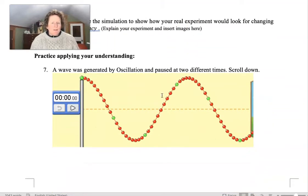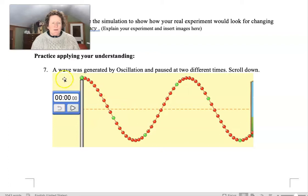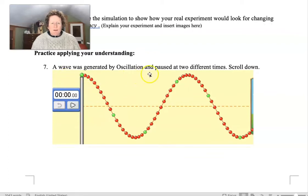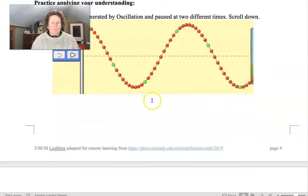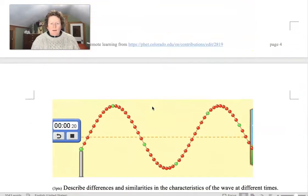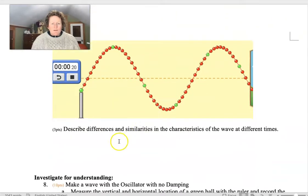So practice applying your understanding is question 7. A wave was generated by oscillation and paused at two different times. Scroll down, here's one pause, and here's another pause. Describe similarities and differences in the characteristic of waves at different times.